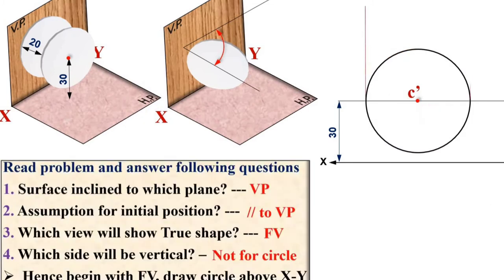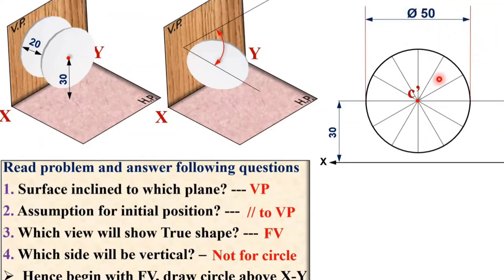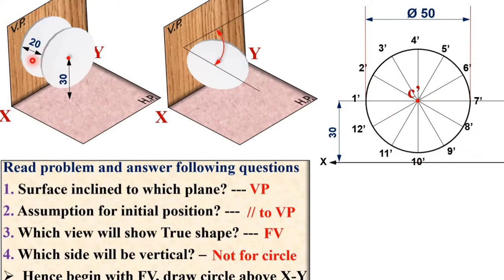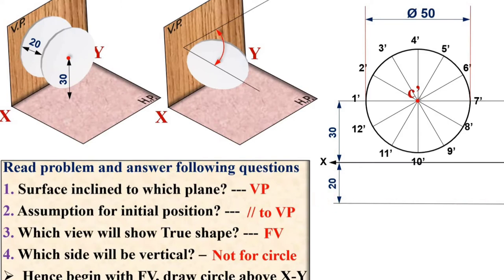Note the diameter is 50 mm. Now divide the circle into 12 equal parts — you can also divide it into 8 equal parts. Give names to the points starting from anywhere but in sequence. Since it is the front view, the point names are with a dash. For the top view, the center is 20 mm in front of VP, so draw a reference line 20 mm from the XY line — the center of the circle must lie on this line.